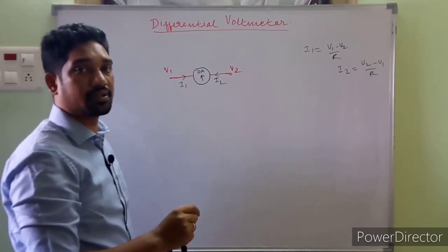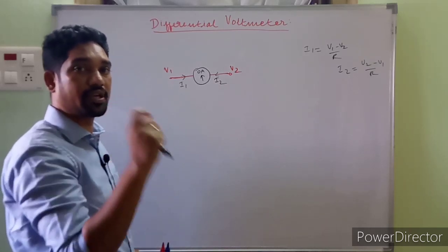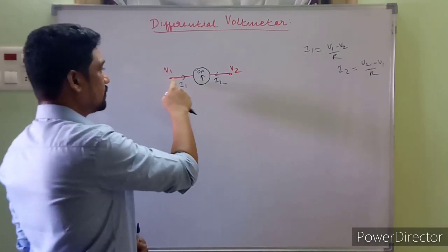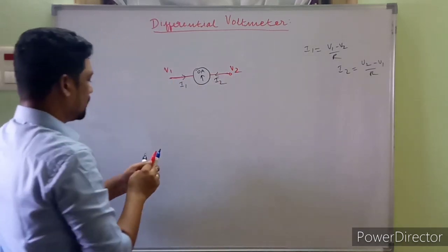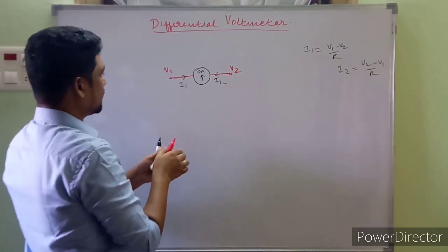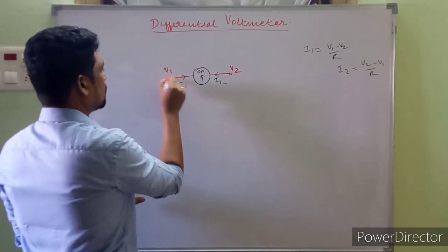It doesn't measure the current, but it's used to detect the flow of current through this loop. So now coming back to the actual picture, what if this V1 is an unknown voltage? What if this V1 is an unknown DC voltage?